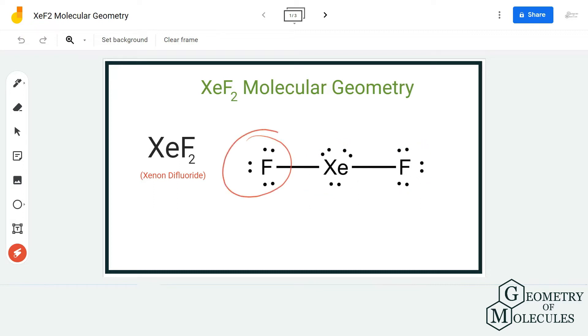To understand the molecular geometry of this compound, we are first going to look at its Lewis structure. This is the Lewis structure of XeF₂ in which xenon is forming two single bonds with two fluorine atoms by sharing two electrons each.